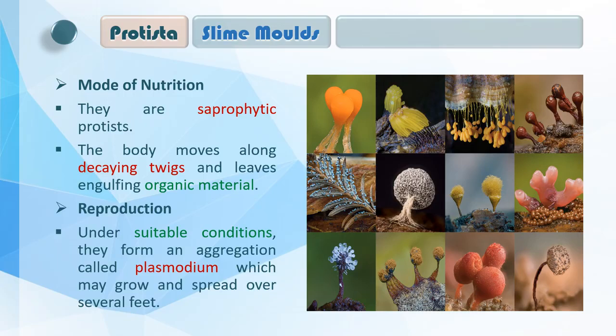Reproduction की बात करें — under suitable conditions they form an aggregation called plasmodium, which may grow and spread over several feet। जब suitable conditions मिलती हैं तब यह reproduction शुरू करती है। इनमें plasmodium नाम का structure form होता है। छोटे-छोटे बहुत सारे cells form होंगे, बाद में वो grow होंगे और फैलेंगे और एक नई slime mold को जन्म देंगे।